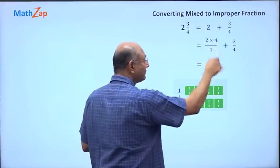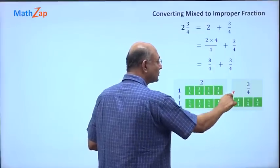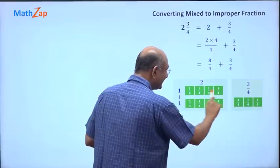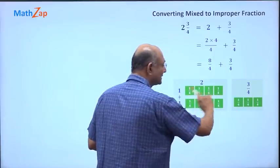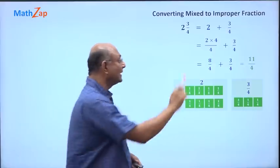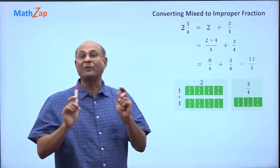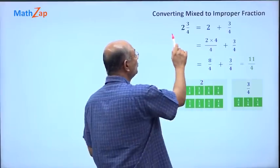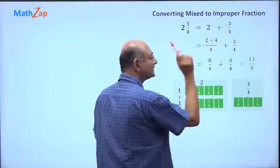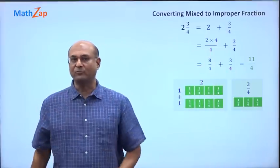So that's why it is 8 by 4. And here we have 3 pieces of 1 by 4. So if I put 3 by 4 here, you can see that there are 8 pieces here and 3 pieces, totally 8 plus 3, 11 pieces of 1 by 4.